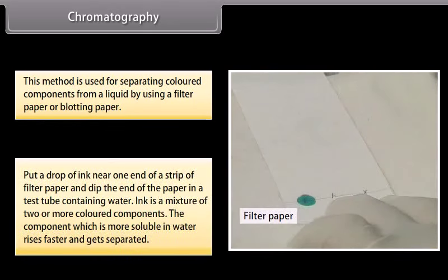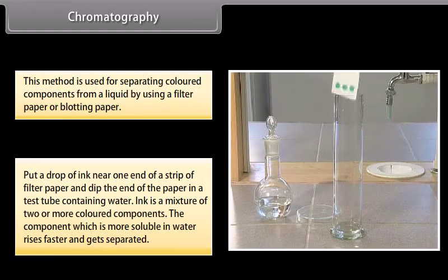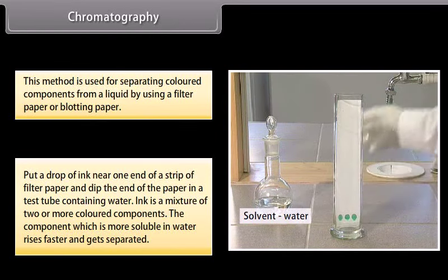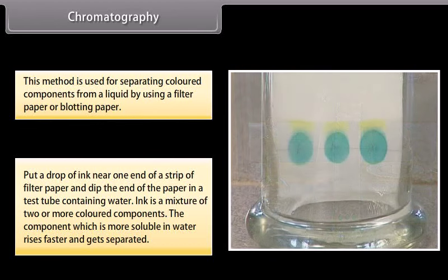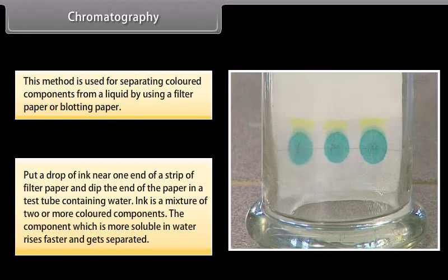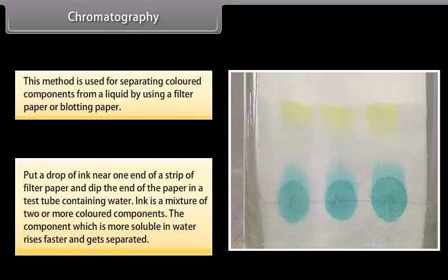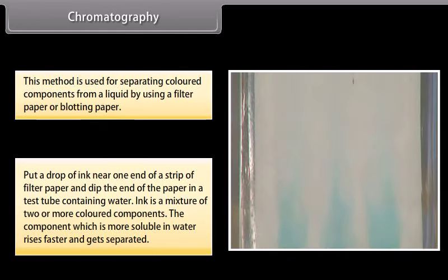Put a drop of ink near one end of a strip of filter paper and dip the end of the paper in a test tube containing water. Ink is a mixture of two or more colored components. The component which is more soluble in water rises faster and gets separated.